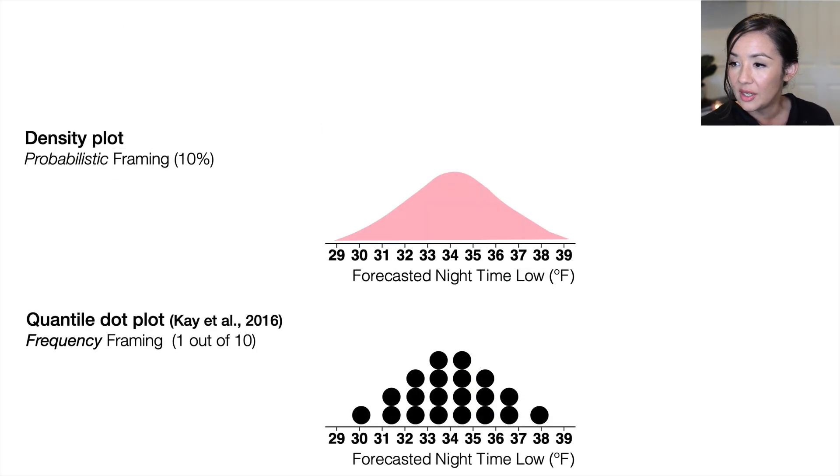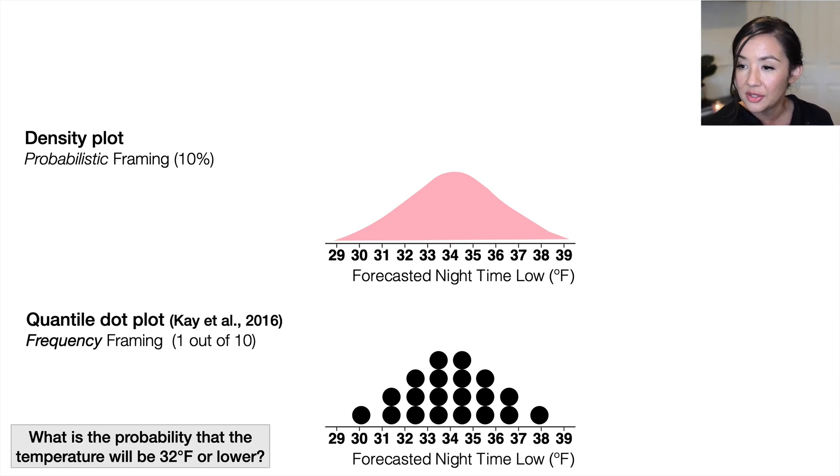The last one is a quantile dot plot, and it utilizes frequency framing. What I mean by frequency framing is expressing something in a format of 1 of 10, kind of a ratio, versus 10% probability. As an example, if I asked you to determine what the probability that the temperature would be 32 degrees or below in this plot, if you try to do that with the density, you would look up 32 degrees, and then you would have to mentally do the integral under the curve, which is really complicated to do visually. With a quantile dot plot, what you could do is count up the dots.